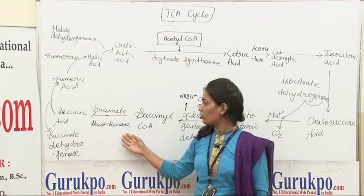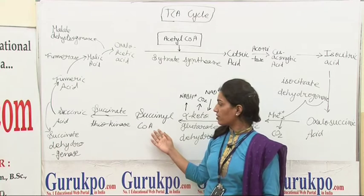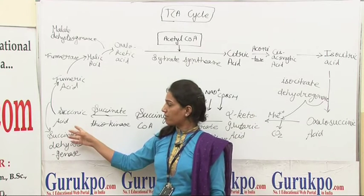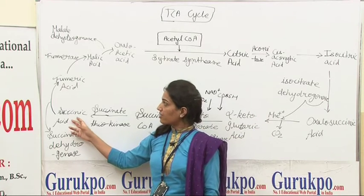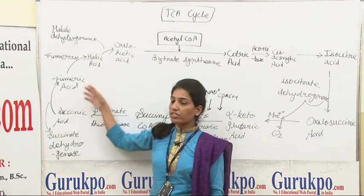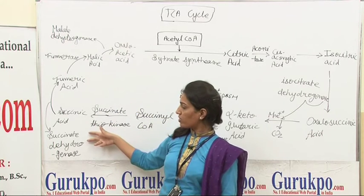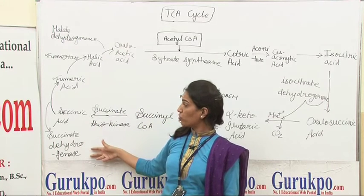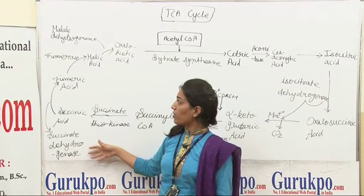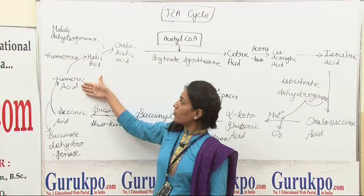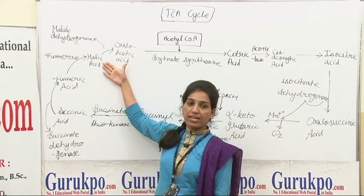Succinate thiokinase enzyme converts succinyl coenzyme A into succinic acid. This succinic acid converts into fumaric acid in the presence of succinate dehydrogenase enzyme.